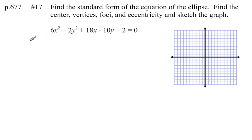So, first of all, let's try to write this in standard form. So I'm going to get my x's together, 6x squared plus 18x. Then I'll leave a space. Then I'll get my y's together, plus 2y squared minus 10y. Then I'll leave another space, and then we'll say equals, and we'll move that 2 over to the right-hand side. Equals negative 2.